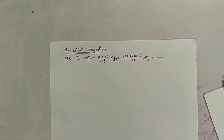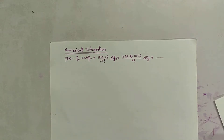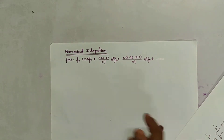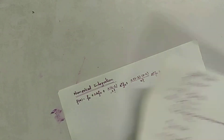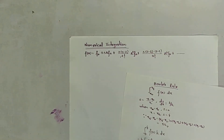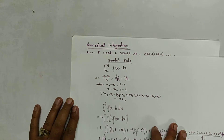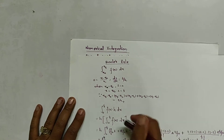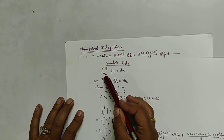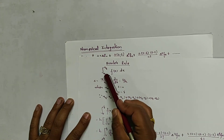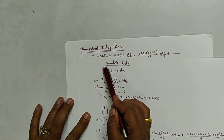The derivation is lengthy so I have written it. Since n equals to 4, we move from x0 to x4.